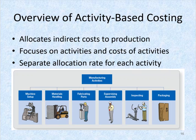The focus of activity-based costing is of course on activities and the cost of performing those activities. Each activity is going to have its own cost driver and use a separate allocation rate. ABC recognizes that activities are costly to perform.